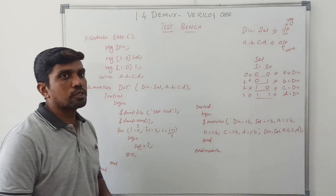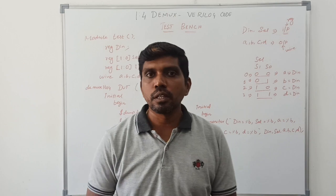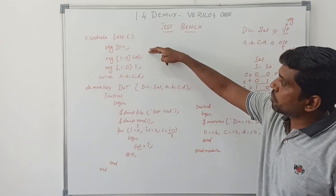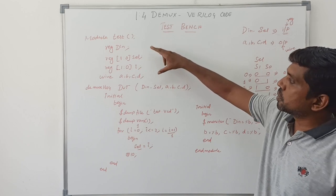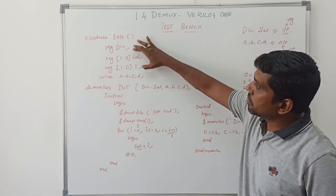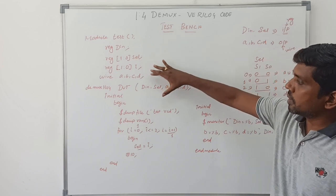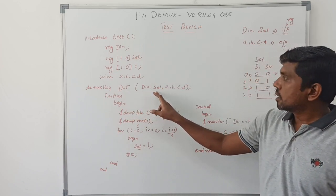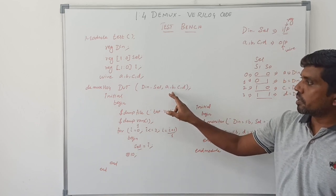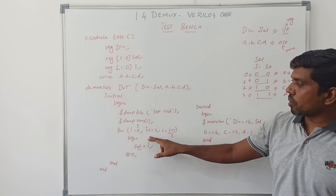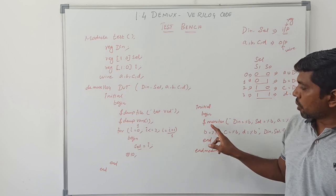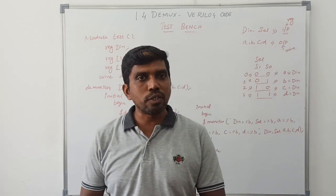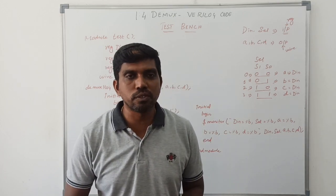It is a simple testbench Verilog HDL code for a 1-to-4 demux. First write the module, then module name, then declaration of input variables as register and output variables as wire. Then instantiate the DUT with its variables, initialize the variables, use a for loop for iteration, and monitor the result. End module. I hope you understood the concept. If you are watching my video for the first time, kindly subscribe and support us to make more videos.